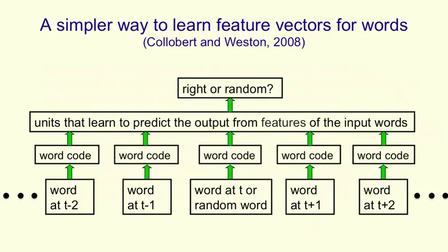There's a much simpler way to learn feature vectors for words. This is work by Colbert and Weston. What they did was learn feature vectors for words and then showed that the feature vectors they learned were very good for a whole bunch of different natural language processing tasks. They're not trying to predict the next word; they're just trying to get good feature vectors for words. So they use both the past context and the future context. They look at a window of 11 words, five in the past and five in the future. In the middle of that window, they put either the correct word, the one that actually occurred in the text, or a random word. Then they train a neural net to produce an output that's high if it's a correct word and low if it's a random word.